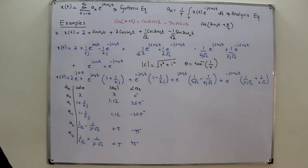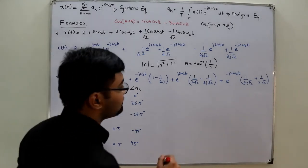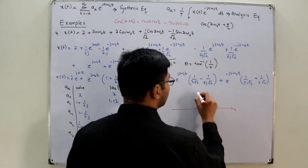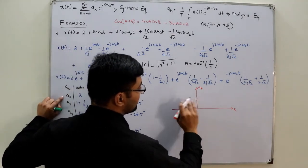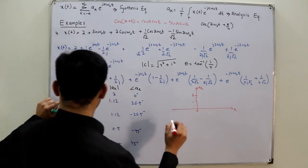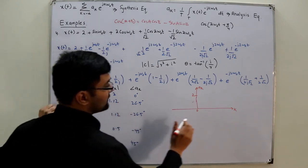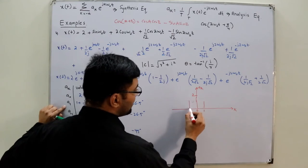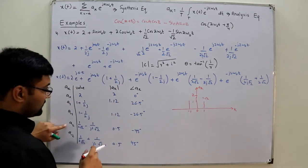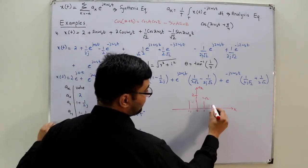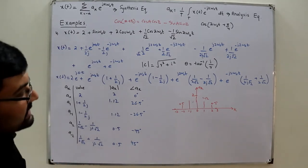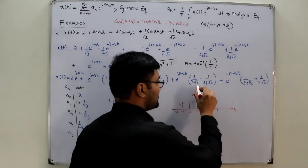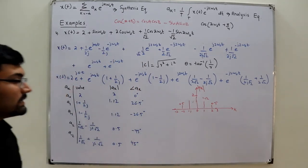Drawing the magnitude spectrum: on the k-axis, at k=0 the value is 2, at k=±1 it is 1.12, at k=±2 it is 0.5, and at k=±3 it is 0. Notice the property from the previous video: the magnitude spectrum is an even function of k — time-reversing it gives back the same values.